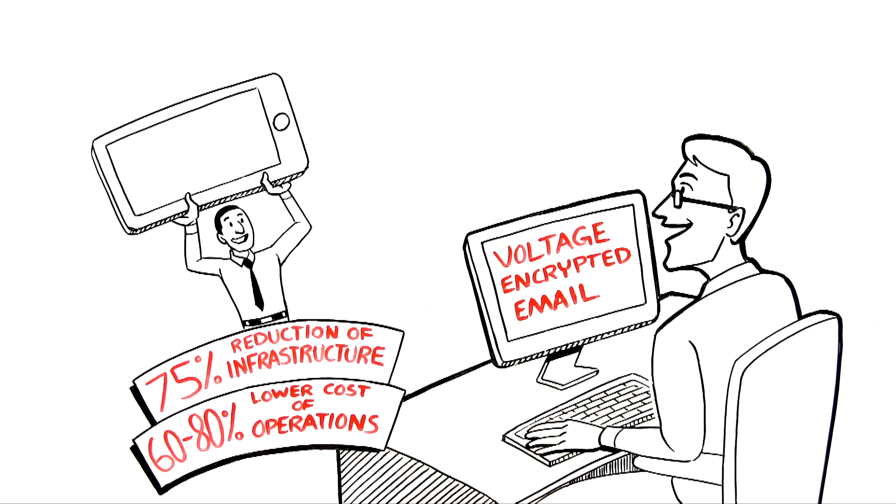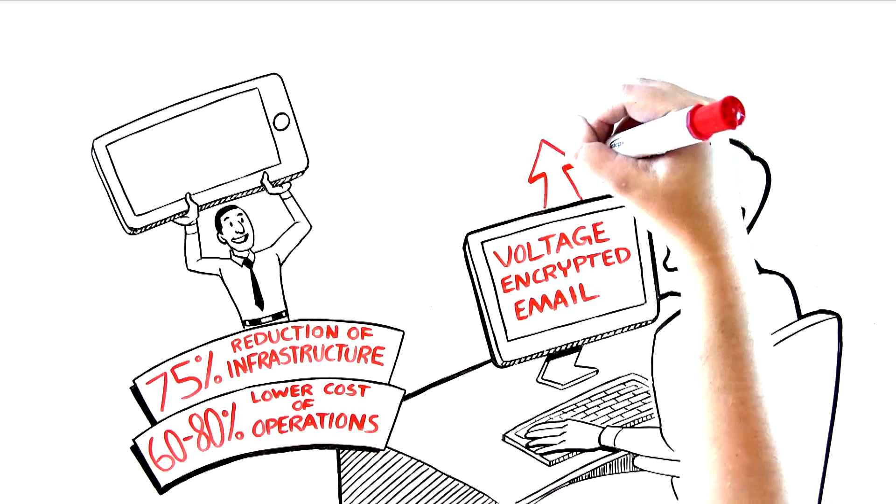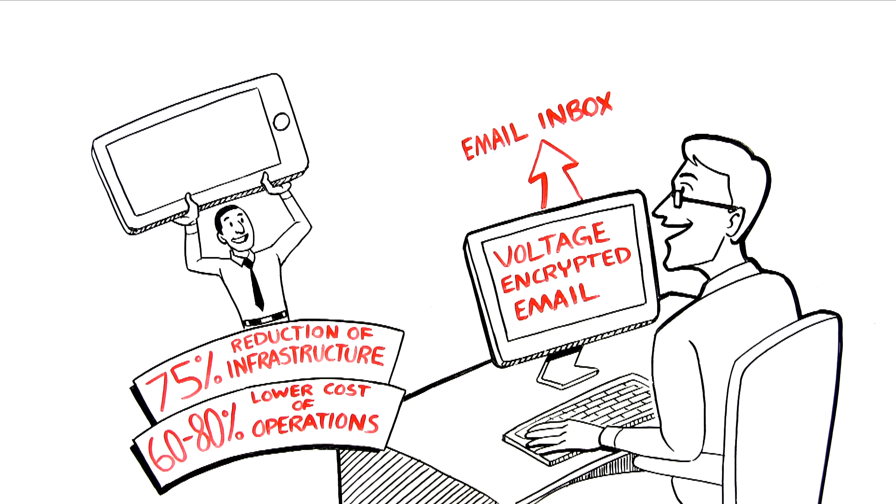Voltage encrypted email is sent directly into the recipient's existing inbox, for example Microsoft Outlook, Gmail, Yahoo Mail, etc. Senders simply need to know the recipient's email address.